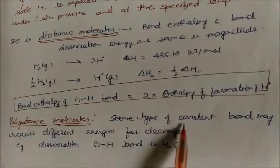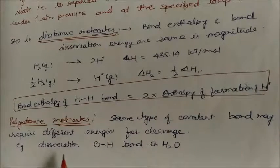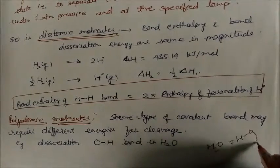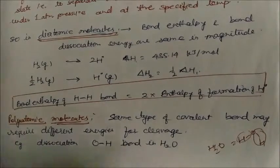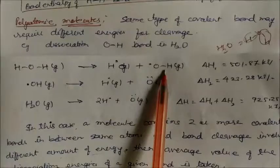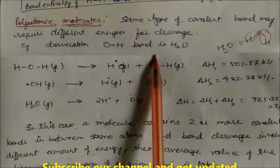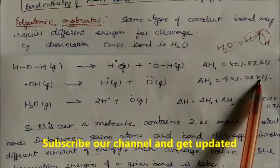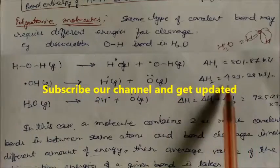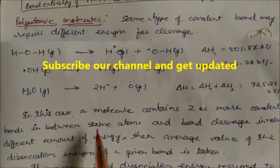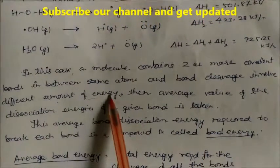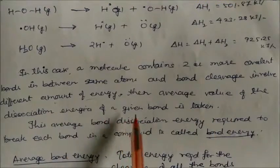In polyatomic molecules, the same type of covalent bond may require different energy for cleavage. For example, H₂O contains two O–H bonds. Breaking the first O–H bond gives H₂O → OH + H with energy ΔH₁, and breaking the second gives energy ΔH₂ = 423.28 kJ/mol. When H₂O is fully dissociated into 2H and O, you add both values. When a molecule contains two or more covalent bonds between the same atoms and bond cleavage involves different amounts of energy, the average value of dissociation energy is taken.